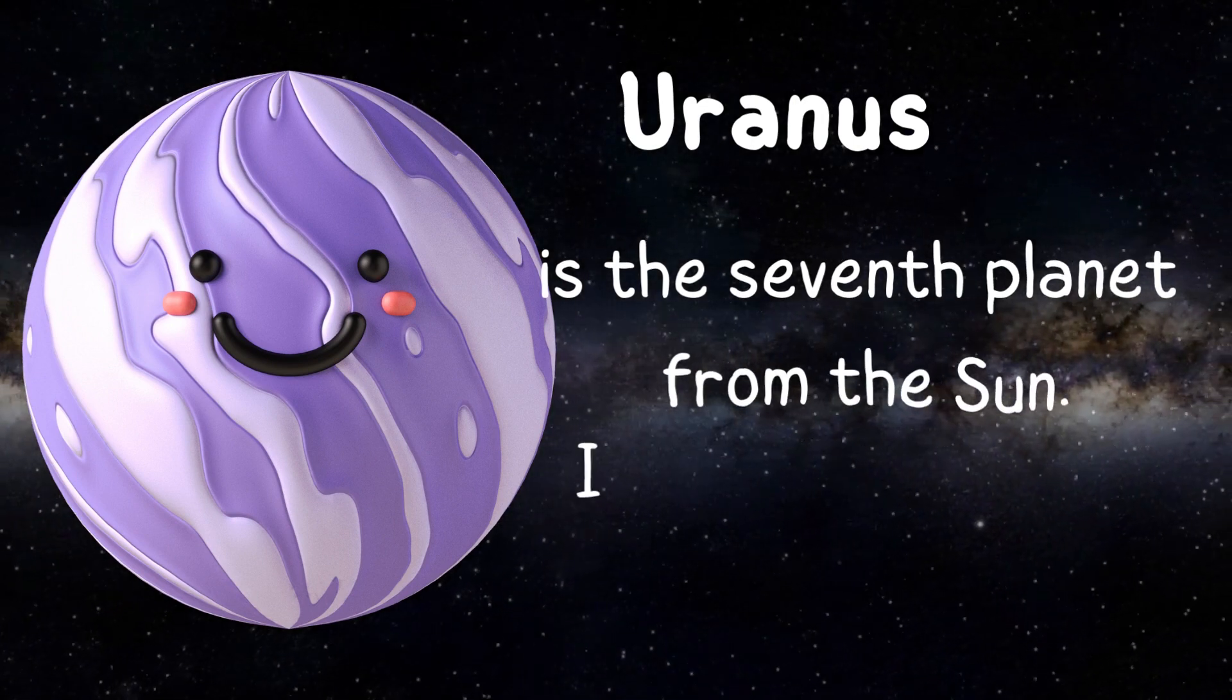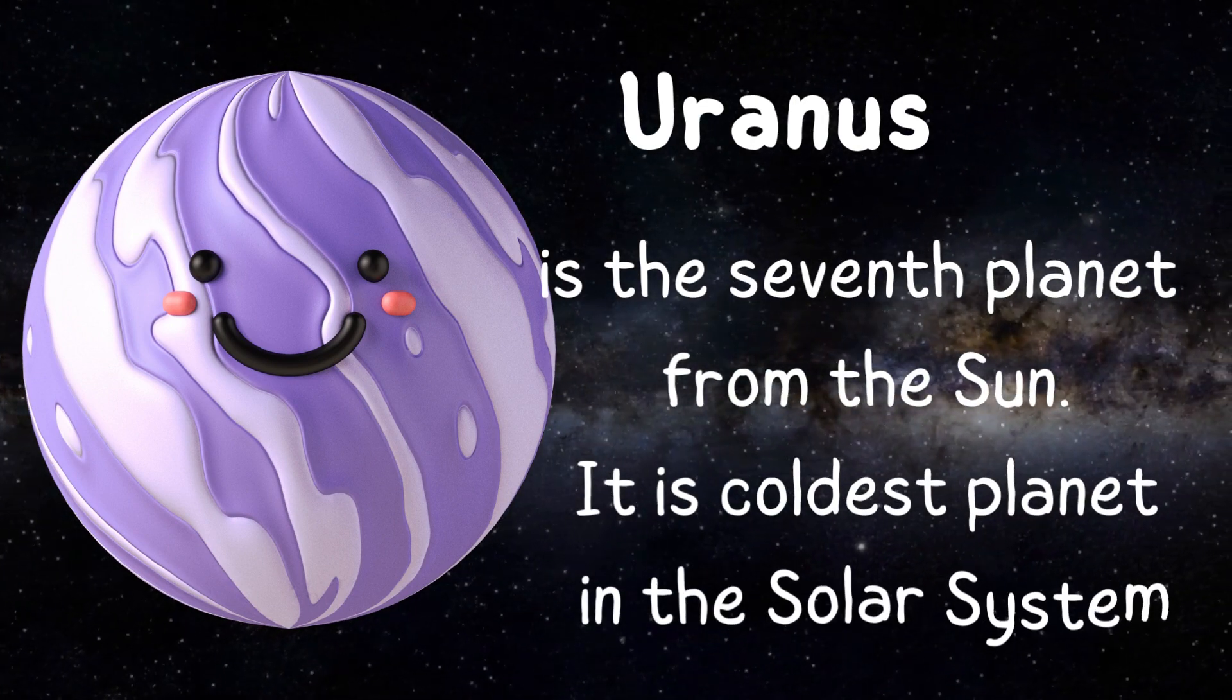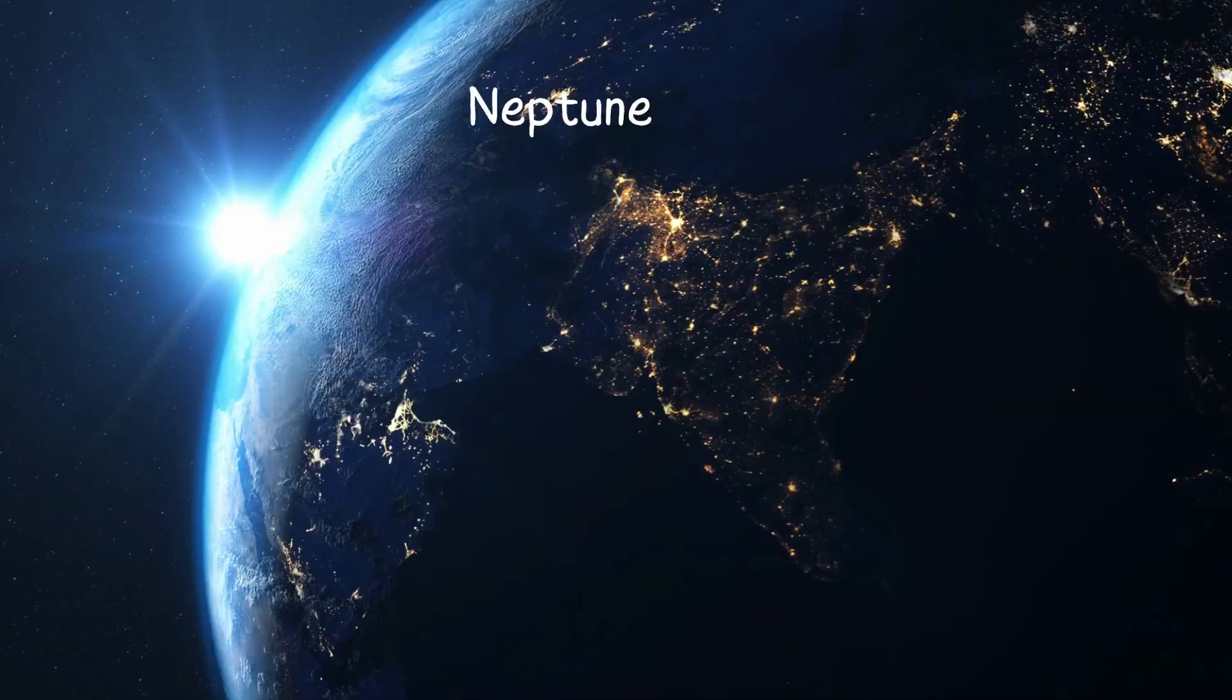Uranus is the seventh planet from the sun. It is the coldest planet in the solar system.